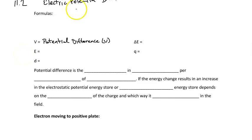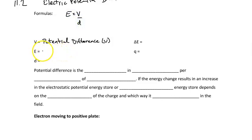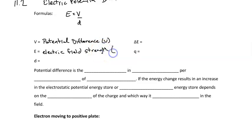There are two formulas associated with this V on our formula sheets. The first one is E is equal to V over D, where E is our electric field strength, and that will have units of volts per meter. D is the distance traveled.